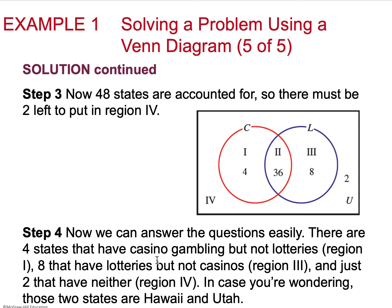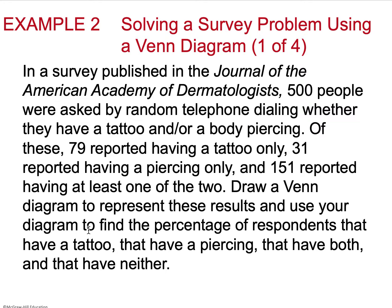48 states are accounted for out of our 50 states, which means that there's two states that are going to be outside of this purview. So I'm going to have two states that fall under that universal set outside of the circles. Now I can look at these questions easily, so I can easily see that eight states have lotteries but no casinos, which is region 3. Two have neither casinos nor lotteries. Being able to draw this diagram simplifies the amount of information that I'm processing into one visual.